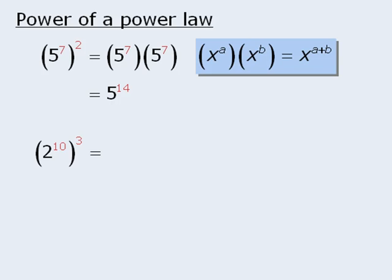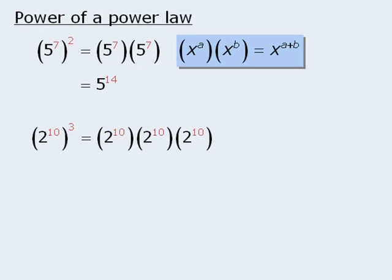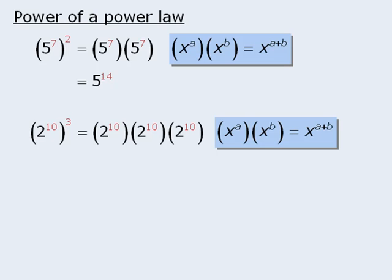Here's another example to consider. The exponent of 3 means we can rewrite this expression as 2 to the power of 10 times 2 to the power of 10 times 2 to the power of 10. Since we have the product of powers, we can apply the product law to combine these powers by adding the exponents to get 2 to the power of 30. So 2 to the power of 10 all to the power of 3 is equal to 2 to the power of 30.